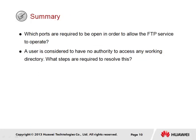In summary, we have a couple of review questions. The first asks which ports are required to be open for the FTP service to operate. By default, TCP control connection port 21 and data connection port 20 must both be open to allow the FTP service to be successfully established. The second question: a user is considered to have no authority to access any working directory — what steps are required to resolve this? This occurs when the default FTP directory has not yet been defined. We can set this using the set default FTP directory command, followed by the location where files are to be stored and retrieved from by default.